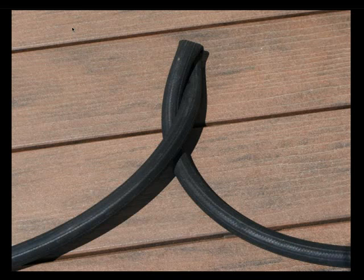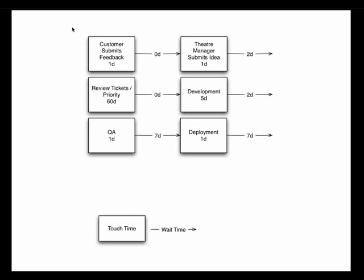There's a theory of constraints which says: first, we want to identify those bottlenecks — we can use the value stream map to do that. Then we want to identify, protect, and see if we can route things around the bottleneck. In the case of QA, maybe we start doing developer testing so our initial quality is much higher. And then, lastly, we want to exploit the constraint — improve the efficiency of that particular constraint. Maybe there's a tool or a different method we can apply to quality assurance.